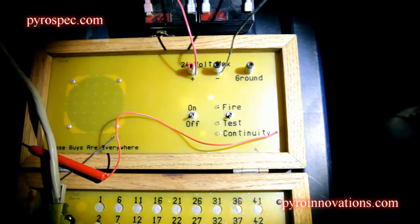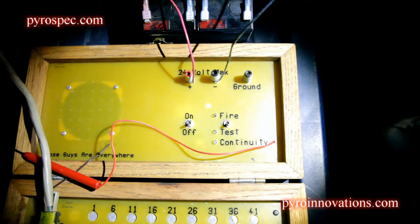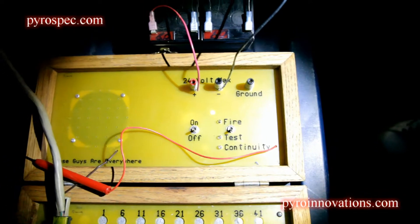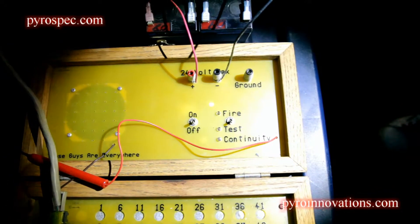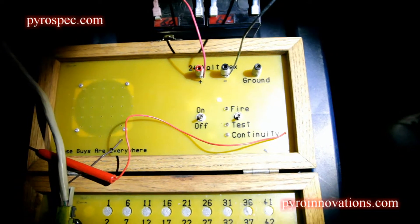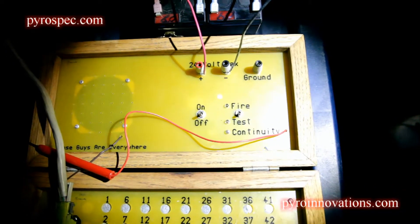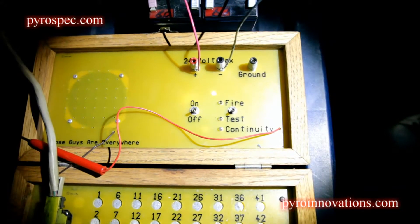Most all firing systems have a test mode or continuity mode that's used to test the circuits out in the field by sending a very low current through your firing cables through the electric match. That current is much lower than the no-fire current of the electric match.